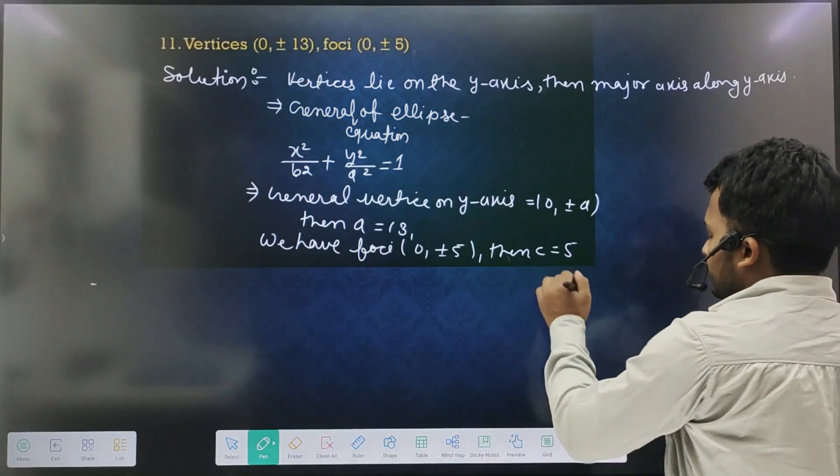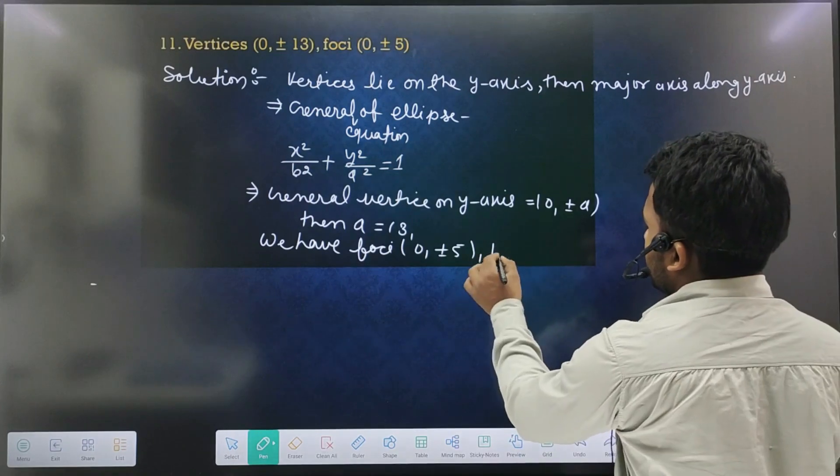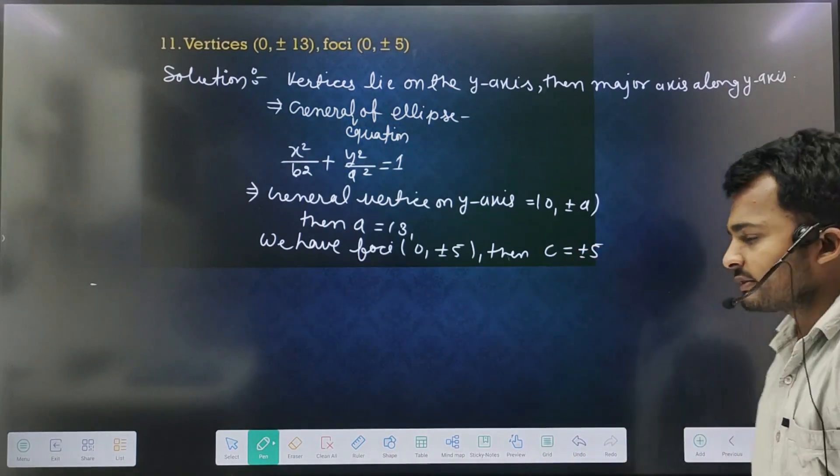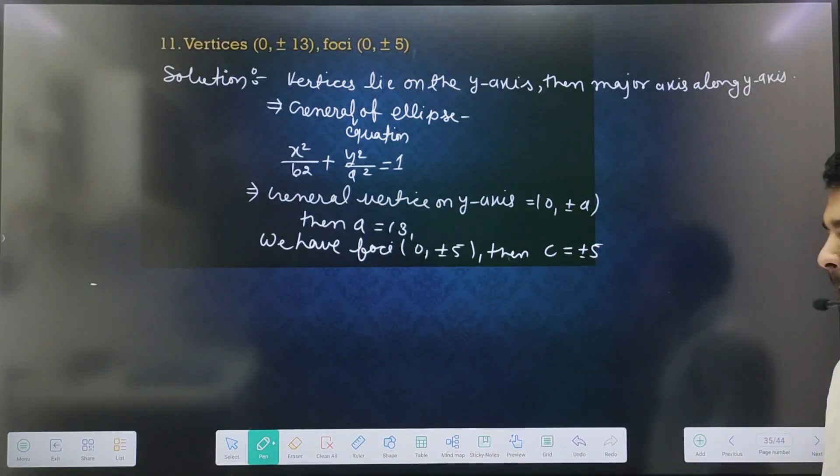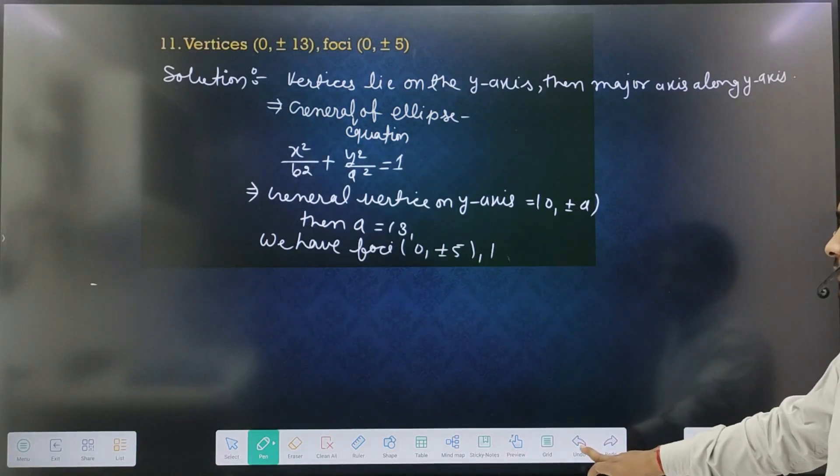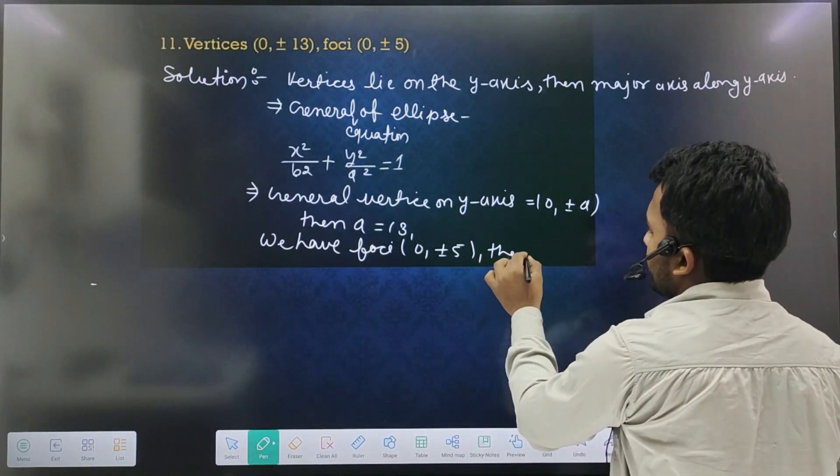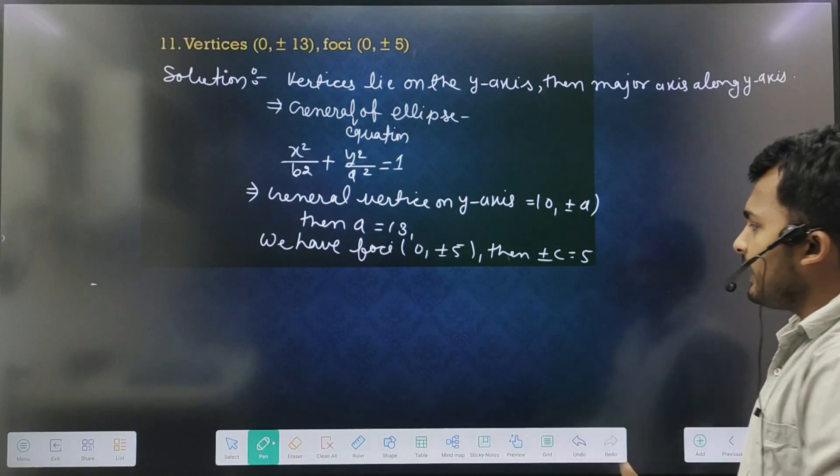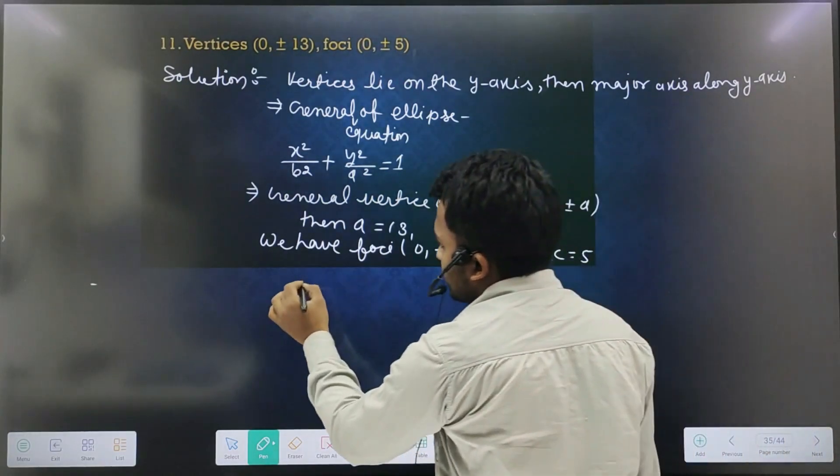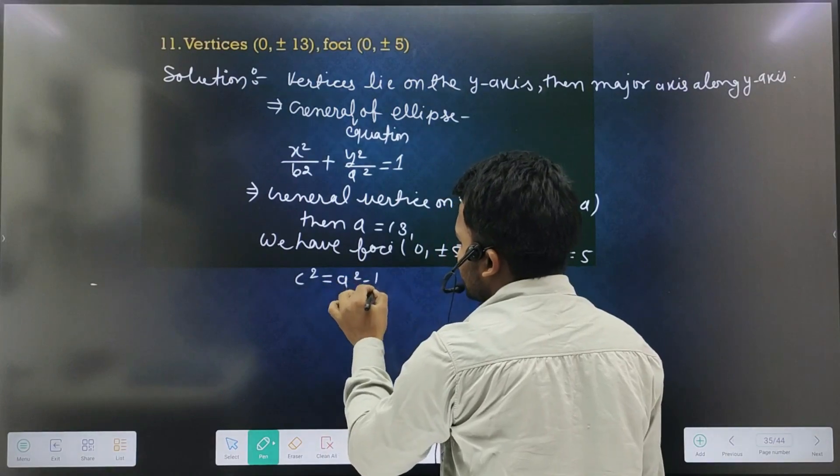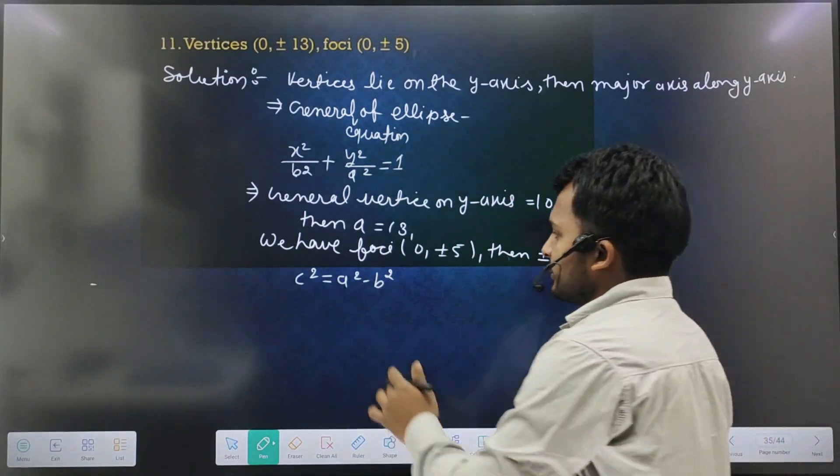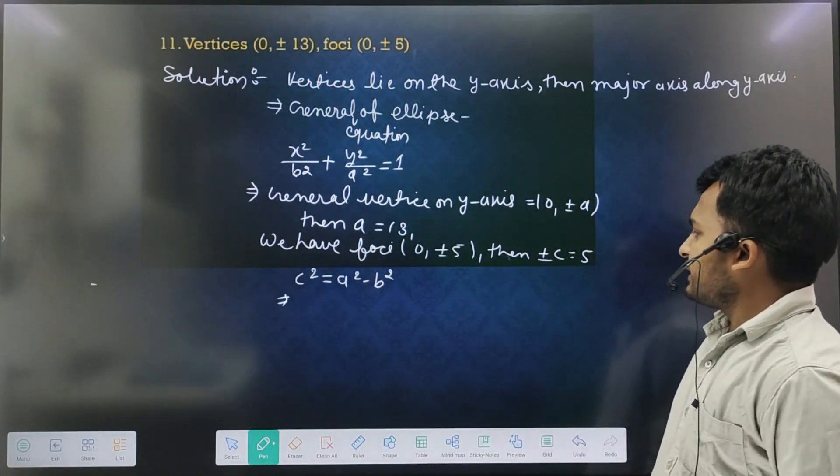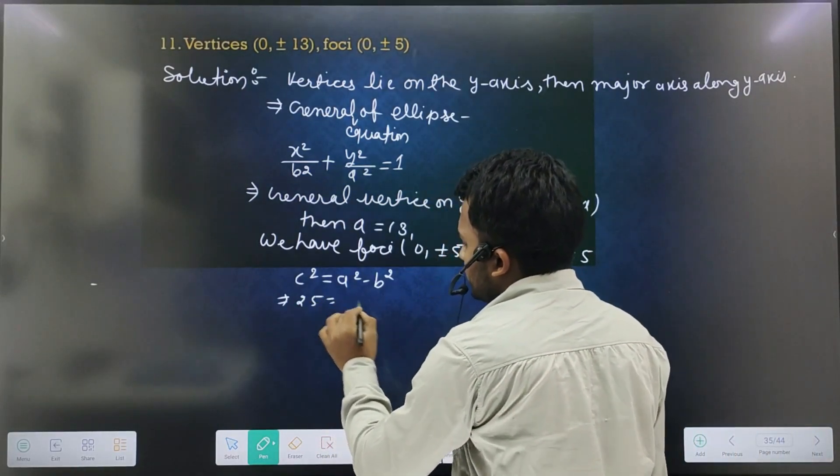C equal to plus minus 5. So c will come here. Then what will we do? c is plus minus 5. Here you have c and a. c equal to a b square.